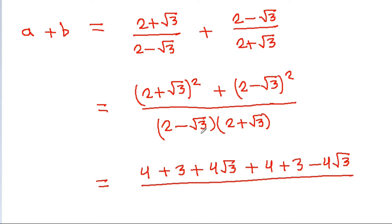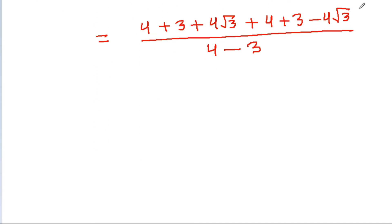And (2 - root 3) squared is 4 minus 3, which is 1 in the relevant term. The denominator (2 + root 3)(2 - root 3) equals 2 squared minus root 3 squared, that is 4 minus 3, which equals 1. So adding the numerator terms gives a + b equal to 14.